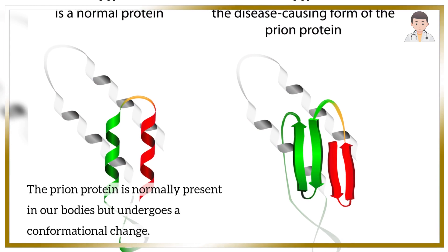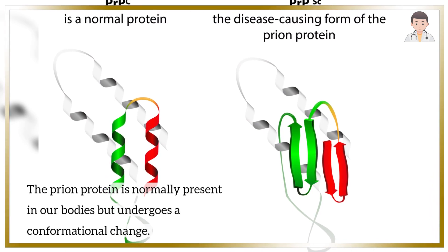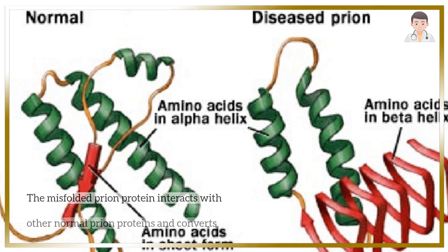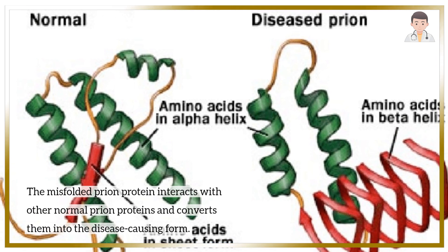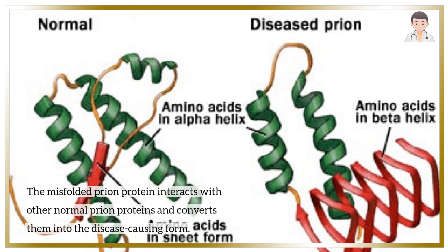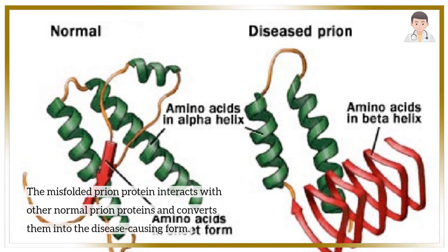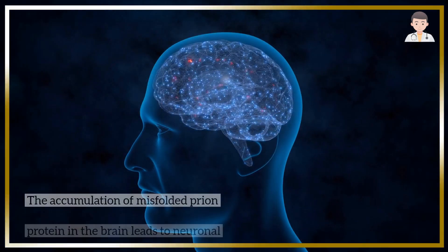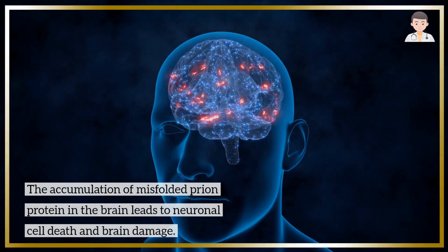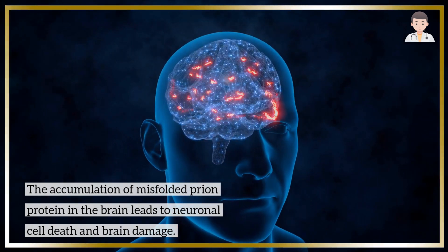The prion protein is normally present in our bodies but undergoes a conformational change. The misfolded prion protein interacts with other normal prion proteins and converts them into the disease-causing form. The accumulation of misfolded prion protein in the brain leads to neuronal cell death and brain damage.